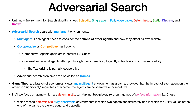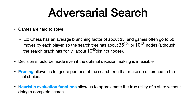In AI we assume the environment is deterministic and fully observable, with utility values at the end of the game. This simplification makes the problem more tractable. Games in general are hard to solve due to complexity — in chess, for example, the branching factor is 35, and some games go up to 50 moves per player.